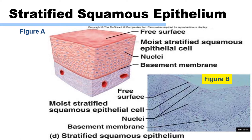Stratified squamous epithelial tissue consists of multiple layers of flat squamous epithelia, which provide protection against abrasion and water loss. It lines the oral cavity, esophagus, larynx, vagina, anal canal, and the outer layer of the cornea.